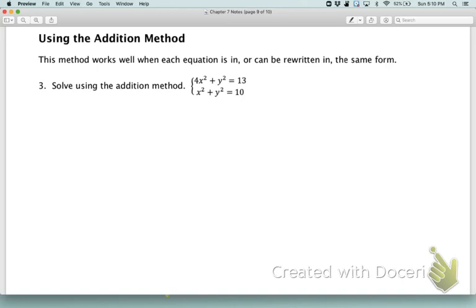To solve example three using the elimination method, I'm going to multiply the bottom equation by negative one. That's going to give me the system 4x squared plus y squared equals 13 and negative x squared minus y squared equals negative 10. The y variables are going to eliminate. When we add that together, we get 3x squared equals 3.